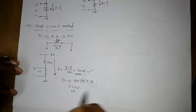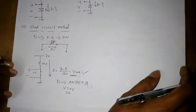So whenever there is a short circuit. So the voltage across the diode will be 0 volt. So what is V? 0 volt.